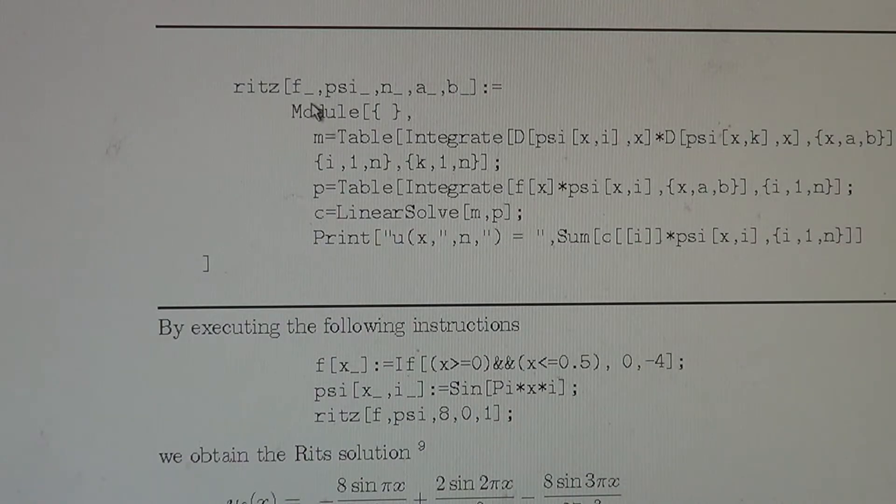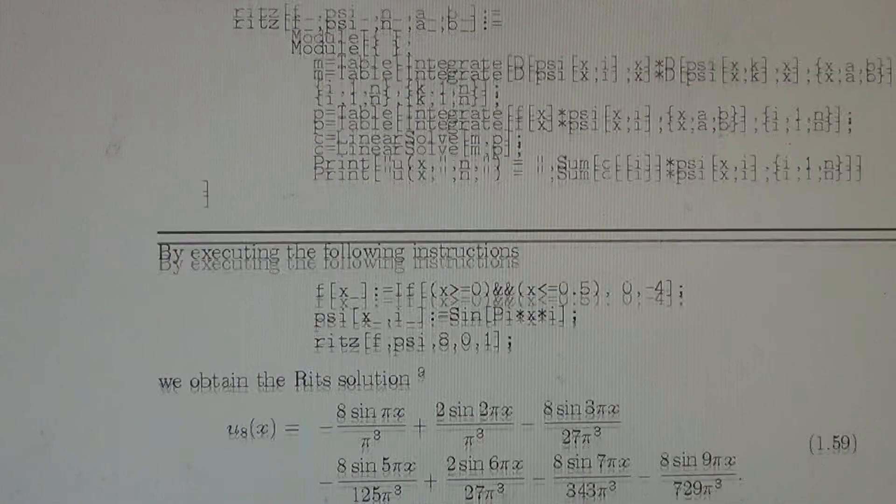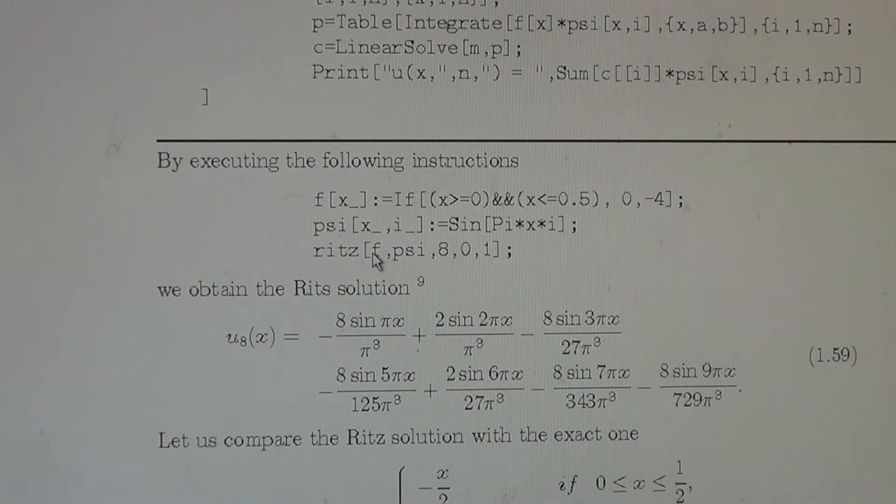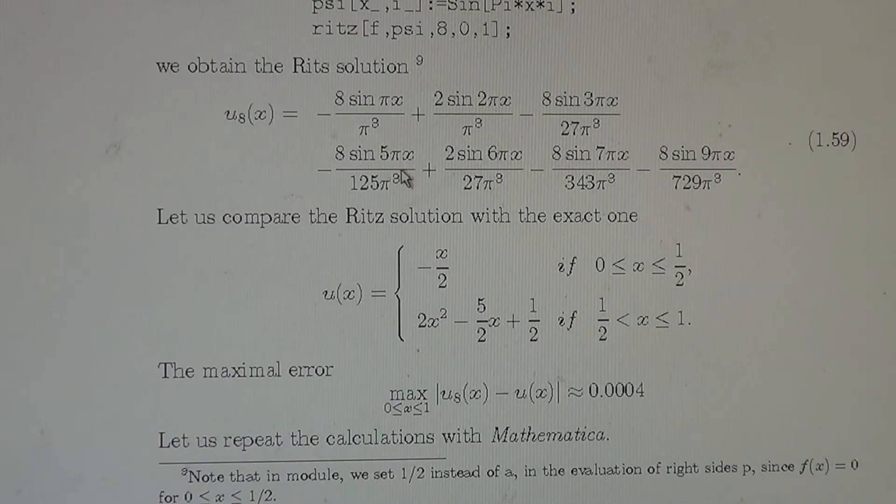This is the Mathematica module, name Ritz, parameters F, the right hand side, Psi Ritz coordinates, and number of terms in the approximation, A, B, interval. We call the module with the parameters, we have to define the function, which is the function in the example. These are the Ritz coordinates, and we call the Ritz of the parameters F of this F, and the Ritz coordinates, these coordinates with eight terms in the 0-1 interval.